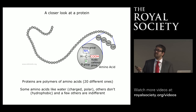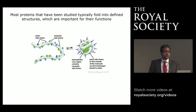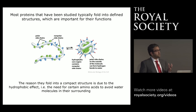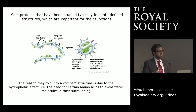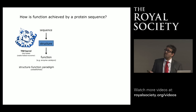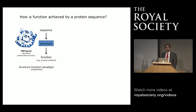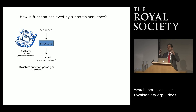Most proteins that have been studied so far typically fold and adopt a defined three-dimensional structure, which is important for function. One reason they are able to fold is because hydrophobic amino acids tend to avoid water molecules, allowing the polypeptide chain to form a compact shape. Thus, the amino acid sequence of a protein determines its ultimate structure, and what shape it takes can determine its function. The classical paradigm has been that an amino acid sequence must adopt a defined three-dimensional structure for function—this has been highlighted by structures of numerous proteins, particularly enzymes, where positioning specific chemical groups in spatial proximity is essential for catalysis.